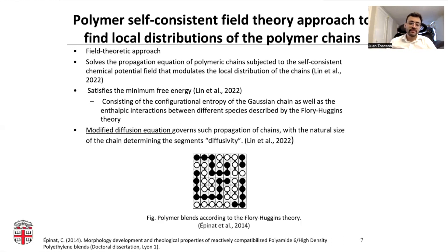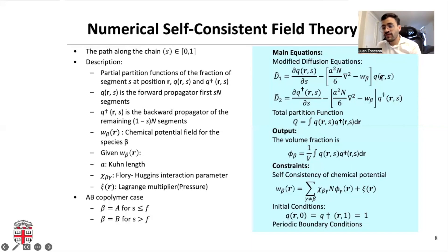This process can be viewed as a modified diffusion equation. The natural size of the chain defines the diffusivity of the segments. Here you can see that these modified diffusion equations relate this chemical potential with the partial partition functions, and this partial partition function for component A and B will change along the position, and both of them will be related with each other through this total partition function. One of the outputs of this study will be to identify the volume fraction.